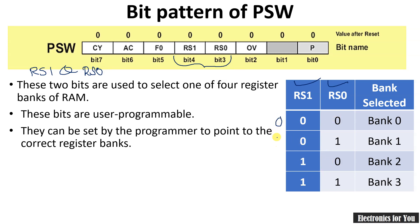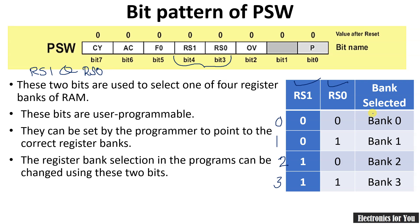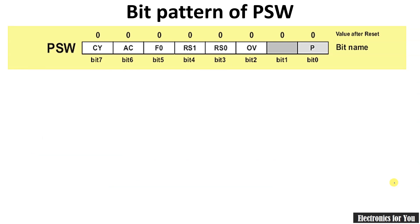RS1 and RS0 can be 00, 01, 10, or 11, with corresponding decimal values 0, 1, 2, and 3, selecting register banks 0, 1, 2, and 3 respectively. The register bank selection can be changed in the program using these two bits. For example, if RS1=1 and RS0=0, register bank 2 is selected; if RS1=1 and RS0=1, register bank 3 is selected.